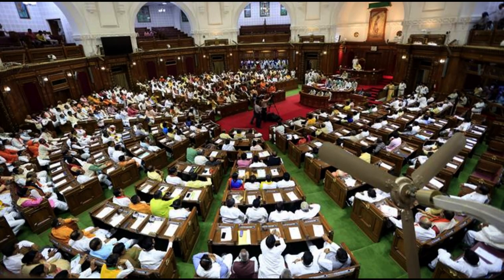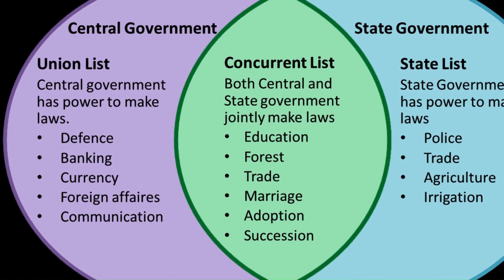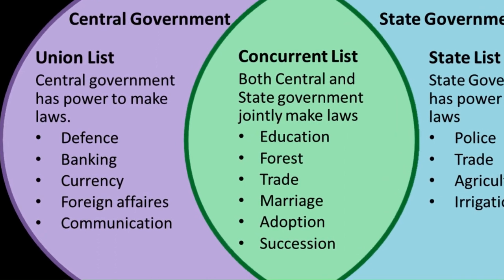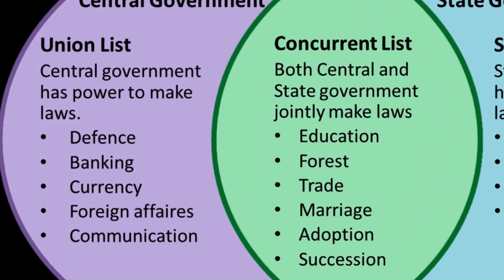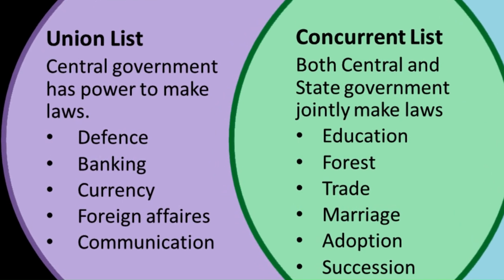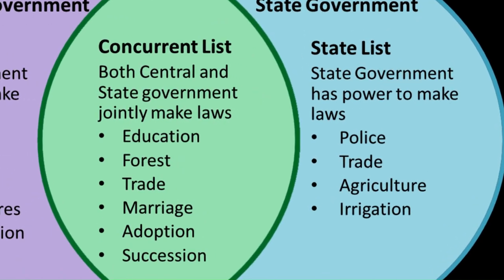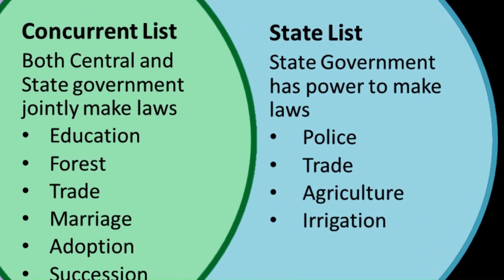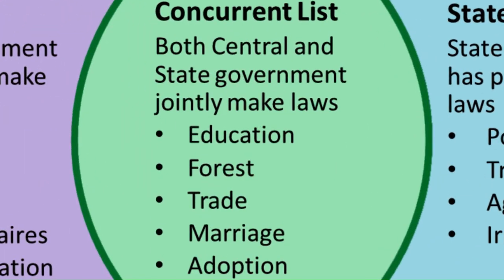Both of them derive their power from Article 246 of the Indian Constitution. The 7th Schedule of the Constitution contains three lists. The centre has executive power to legislate on any matter mentioned in the Union List or State List. The states have executive power to legislate on any matter mentioned in the State List, or List 2. Both the centre and the state have the authority to form laws on matters mentioned in the Concurrent List, or List 3.